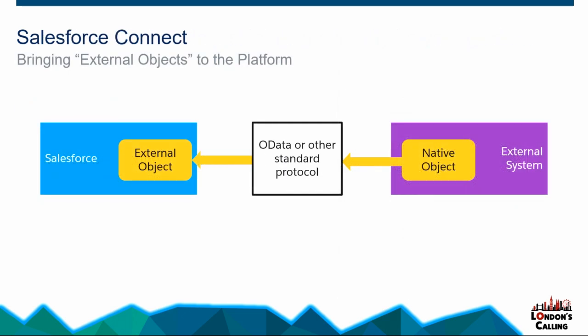Quick background for those who didn't raise their hand. An external object is a way that you can basically take an object that exists in an external system and make it look like an object on Salesforce. And this is done through usually a standard protocol such as OData. So you create a new object, you connect to the remote org, and you can then import these objects.